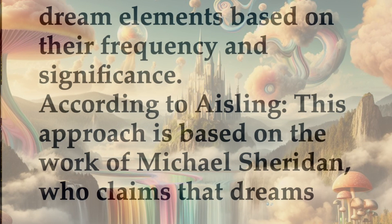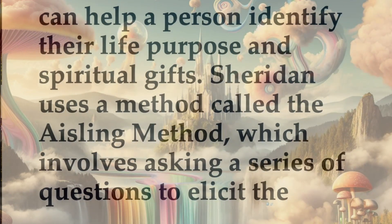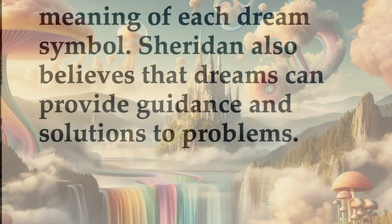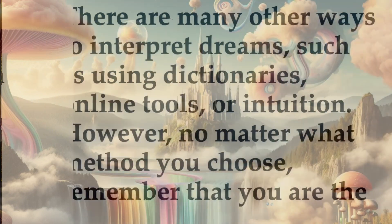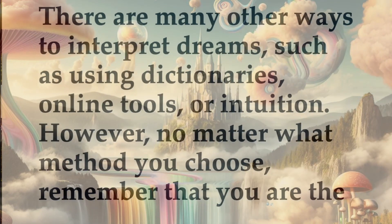Hall also developed a system of coding and categorizing dream elements based on their frequency and significance. 4. The Ashling method: This approach is based on the work of Michael Sheridan, who claims that dreams can help a person identify their life purpose and spiritual gifts. Sheridan uses the Ashling method, which involves asking a series of questions to elicit the meaning of each dream symbol, and believes that dreams can provide guidance and solutions to problems.